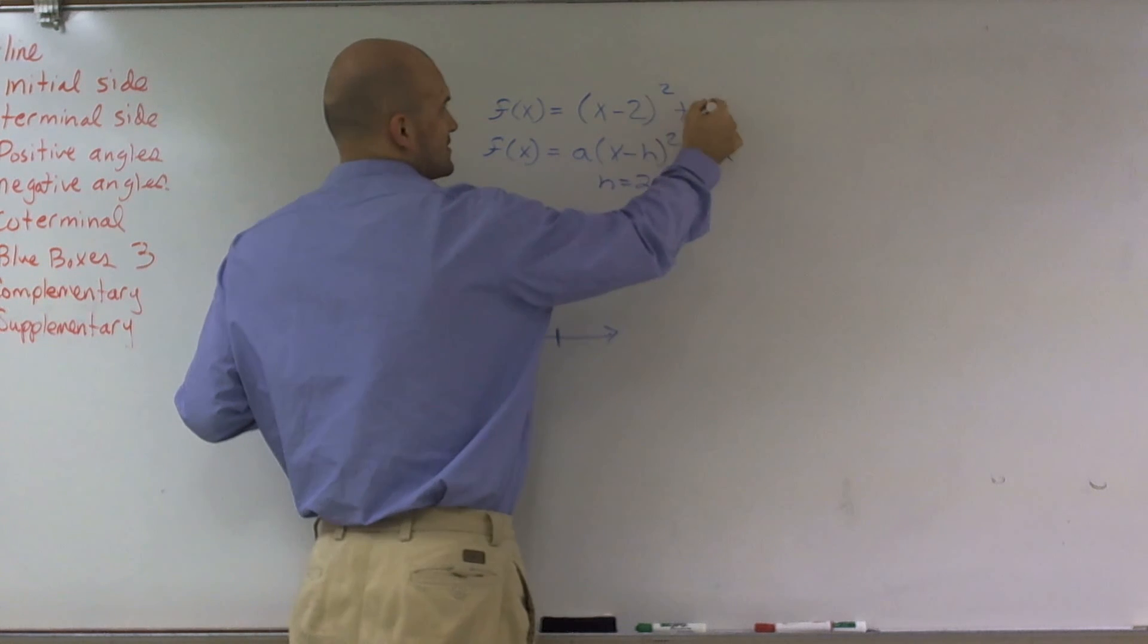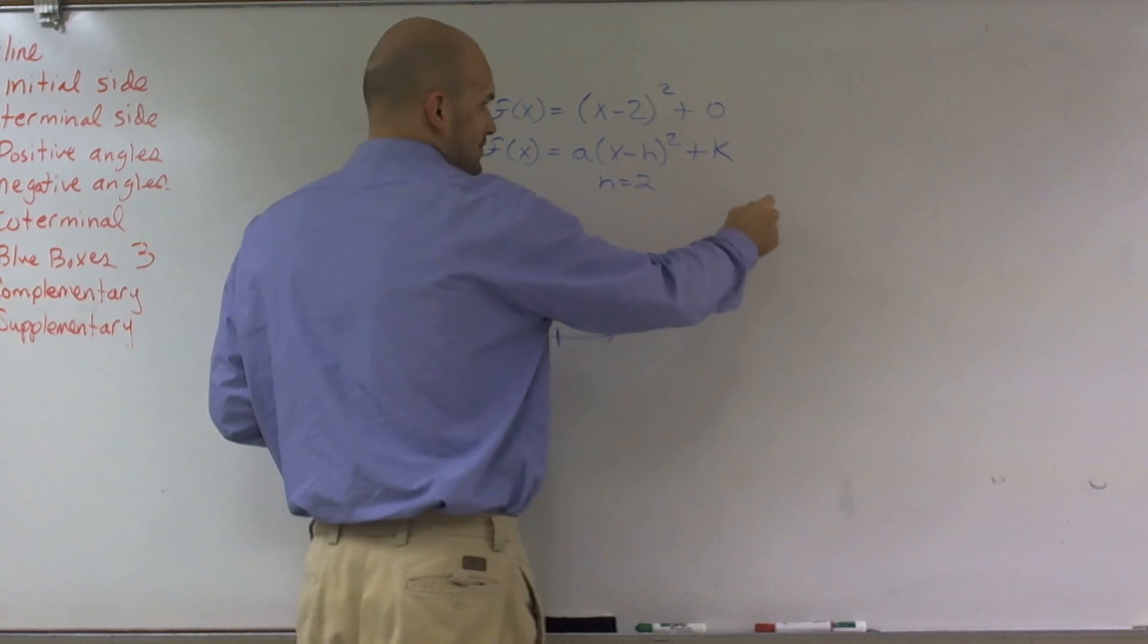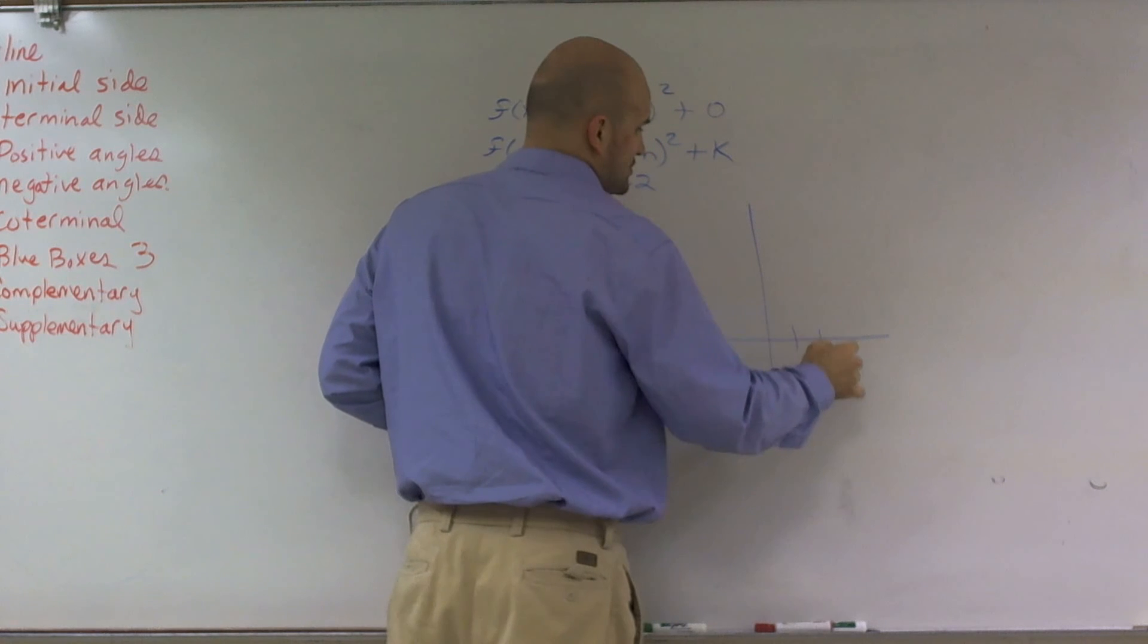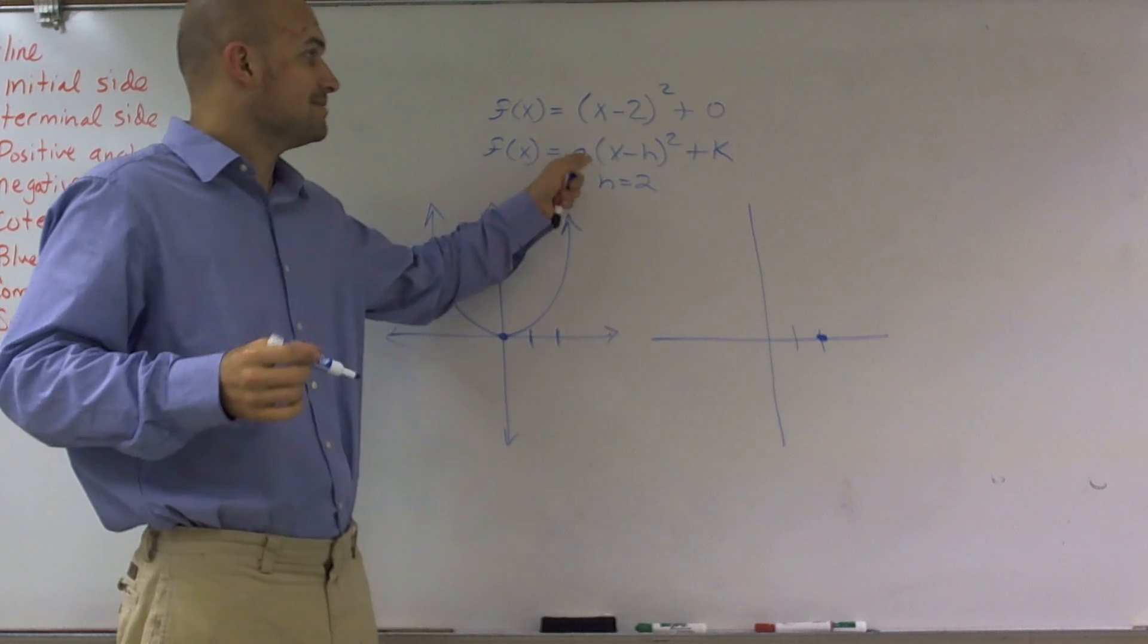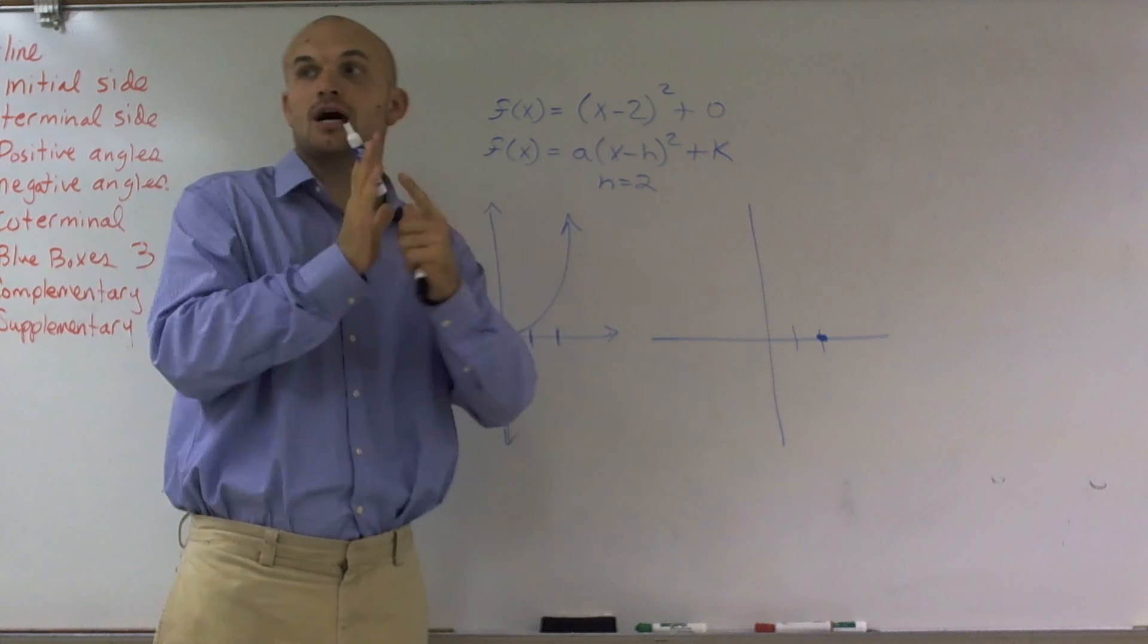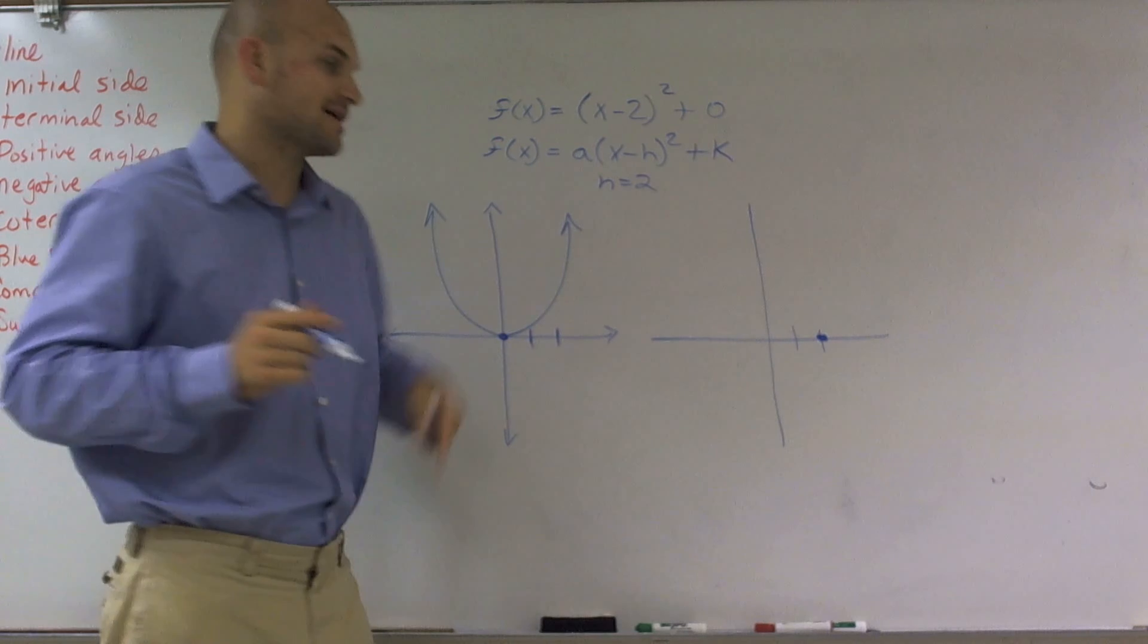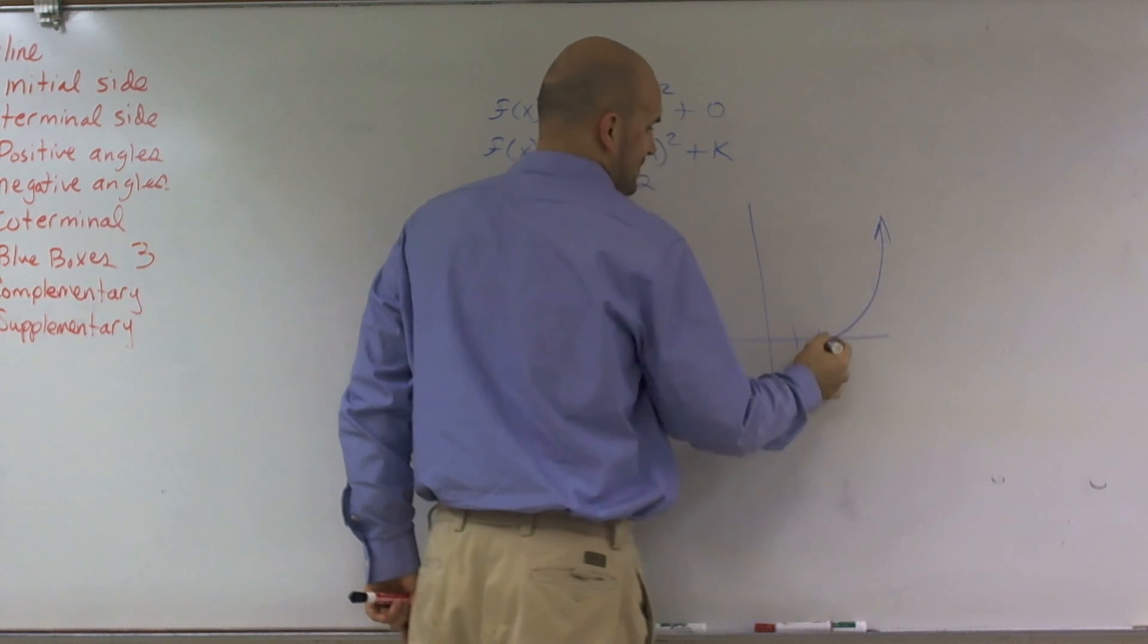Then, if you notice, I don't have a k, so I can rewrite that as plus 0. So to regraph this problem, all I'm really doing is I just have to move my graph over 2 units to the right. My a is not going to compress or stretch it at all, or if this was negative, that would reflect about the x-axis, but I don't have one of those. So all I need to do is graph my point from here.